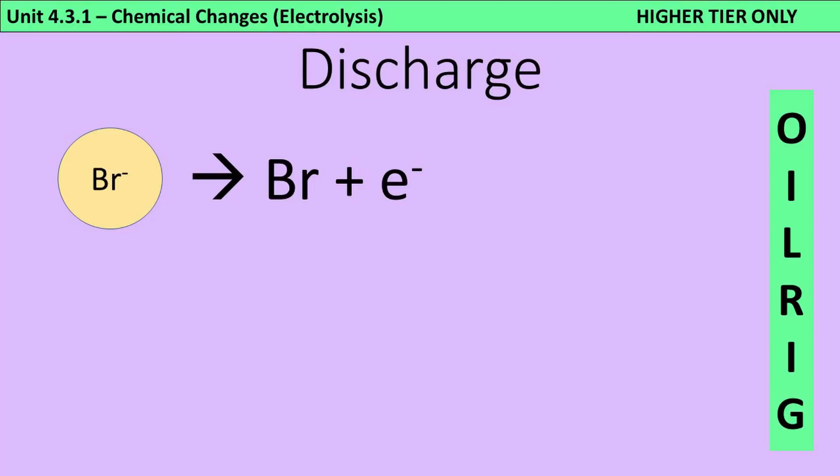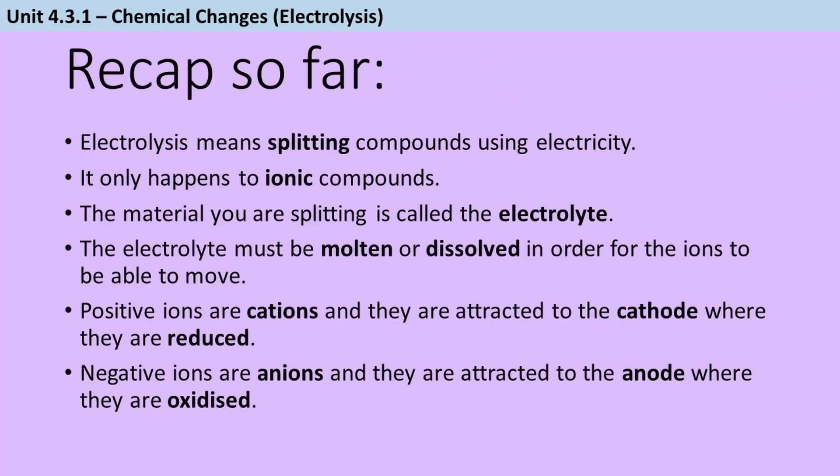So although one ion is going to follow this equation that we've got here, it's not going to stay in that form. It's going to form this molecule with two atoms in it. So this one ion gives up its one electron, but at the same time, a second ion also gives up an electron. So when it comes to writing a half equation, we have two bromide ions going to a bromine molecule with two atoms in it and two electrons.